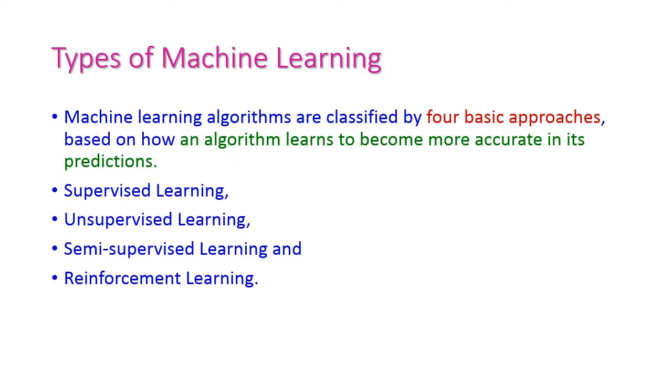Next, let us see the types of machine learning algorithms. These are classified by four basic approaches based on how an algorithm learns to become more accurate in its prediction. First one is supervised learning, second one is unsupervised learning, third one is semi-supervised learning, and the fourth one is reinforcement learning. Let us see all those approaches in detail in forthcoming lessons.